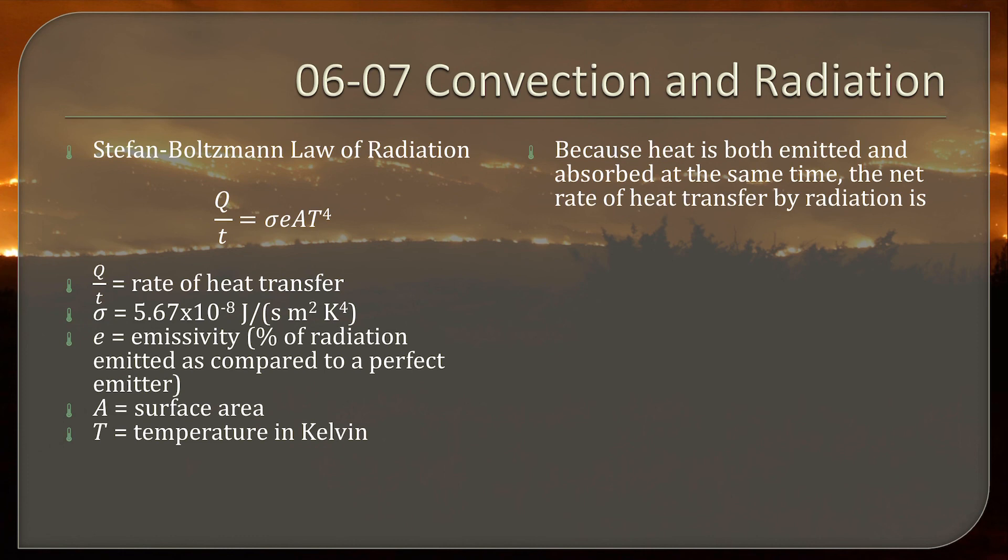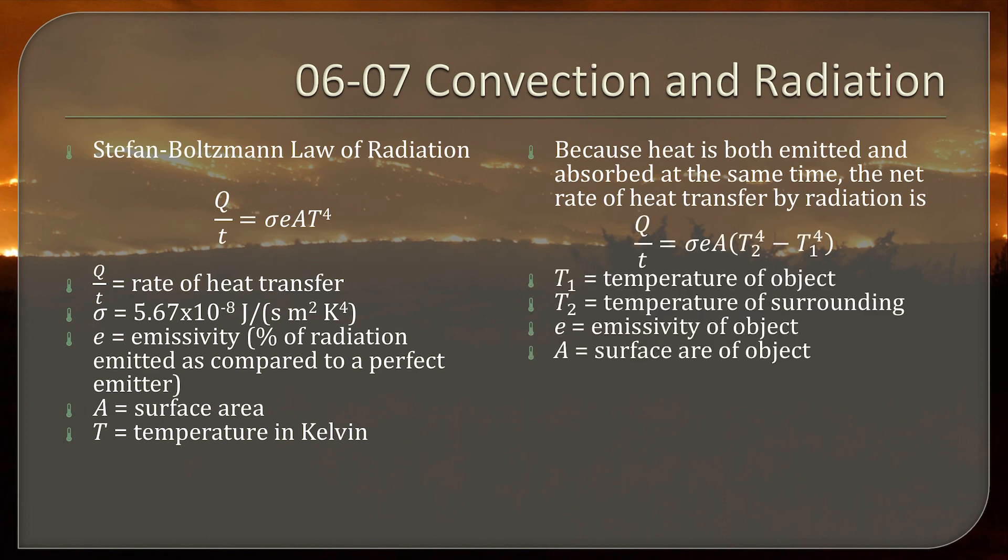Because heat is both emitted and absorbed at the same time, the net rate of heat transfer is that. And so they now have two temperatures, the object and the surroundings. Because the surroundings are also emitting into the object. So if they tell you the temperature of the surrounding area, you'd use the second one. If you just want to know how much heat is emitted or absorbed, then you use the first one.